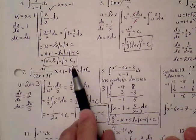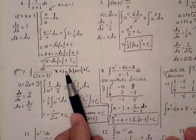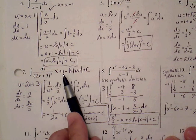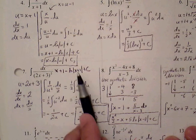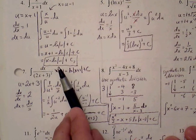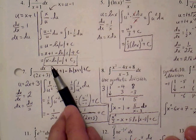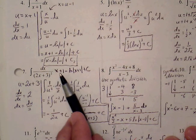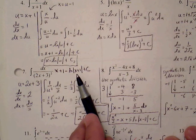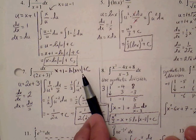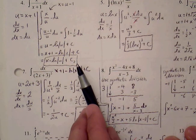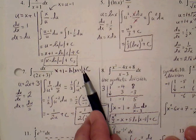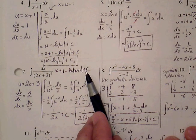The 1 from expanding x plus 1 is a constant that can merge with c, so we can rewrite the answer as x minus natural log of the absolute value of x plus 1 plus c, where c represents an updated constant.